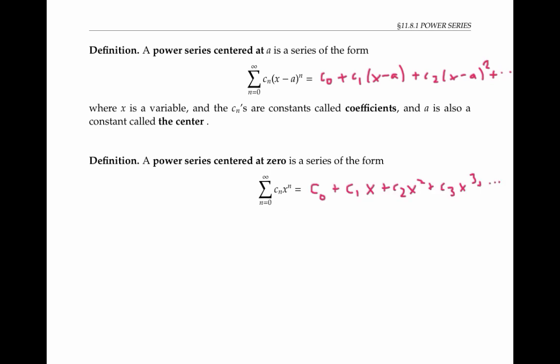Sometimes you might see a power series that starts with index of one instead of zero. That's perfectly legit, it just means there's no constant term. Or if you prefer, you can think of the constant term as being zero. It's also fine for the index to start at some other positive number.